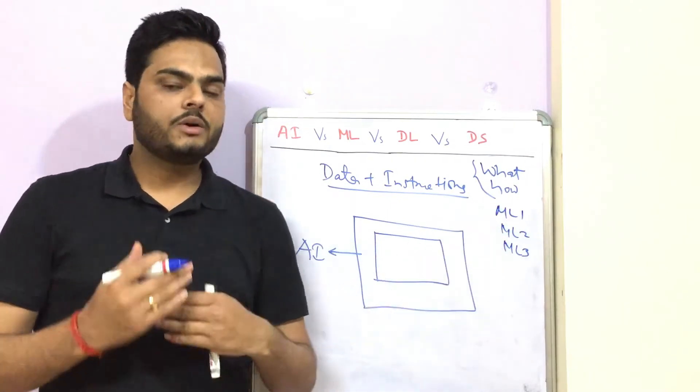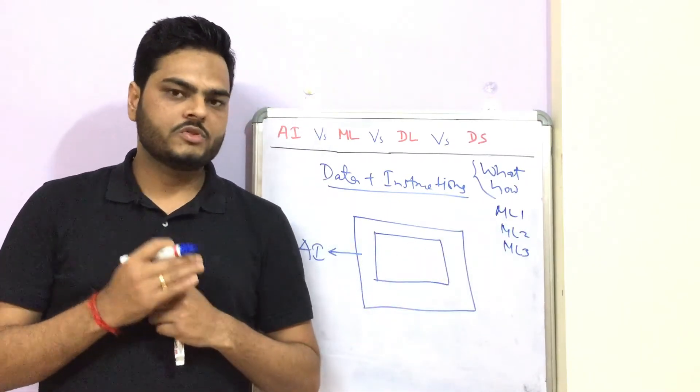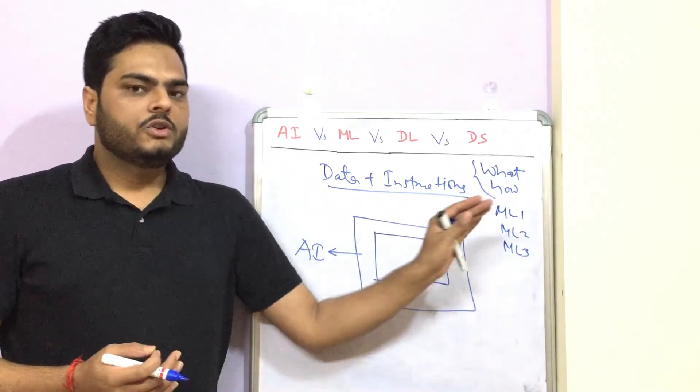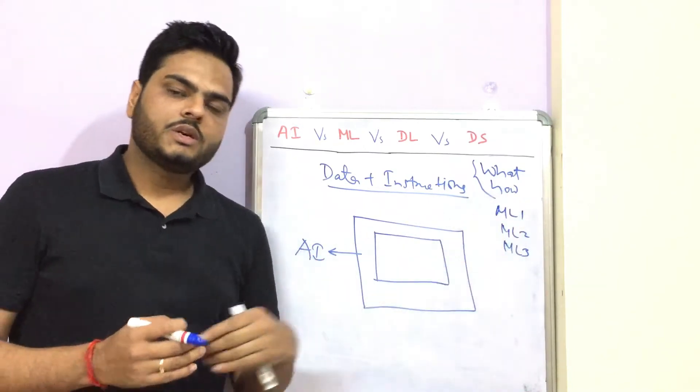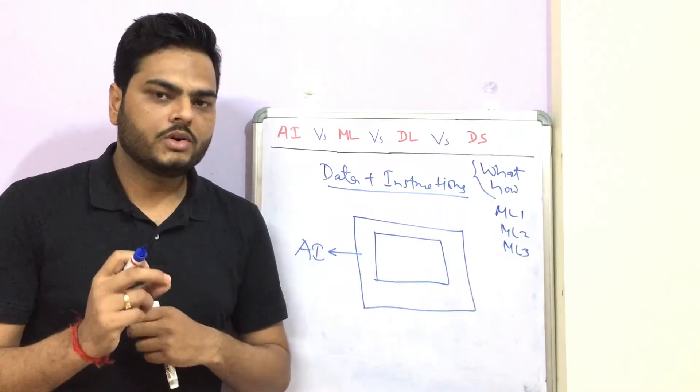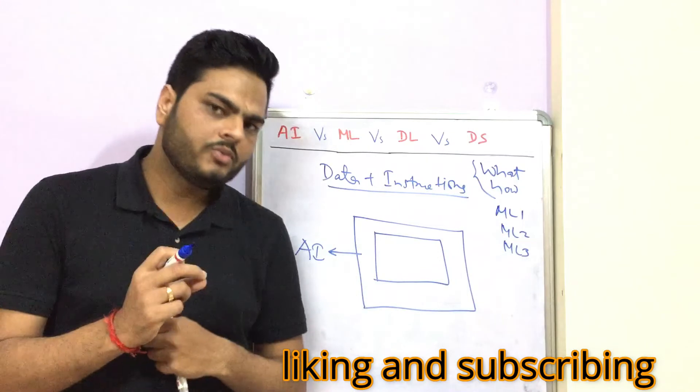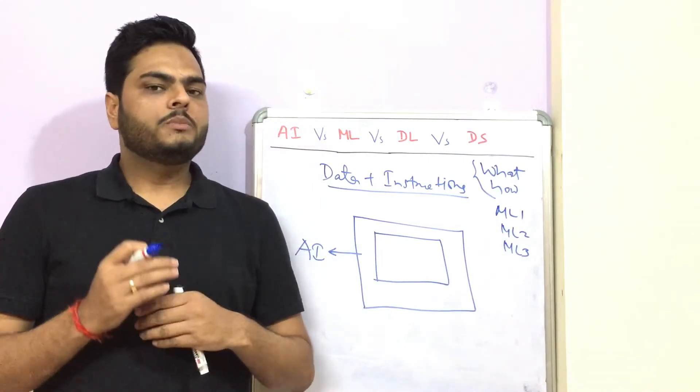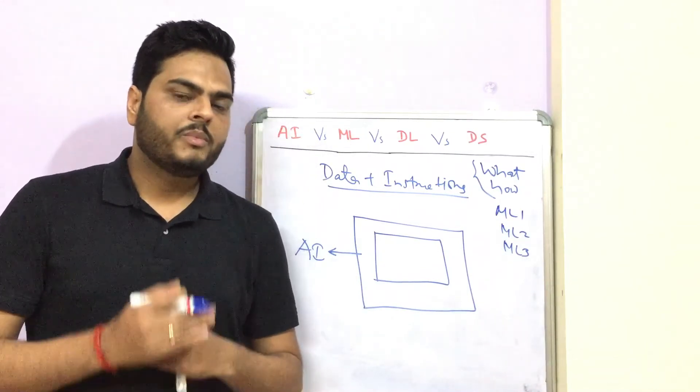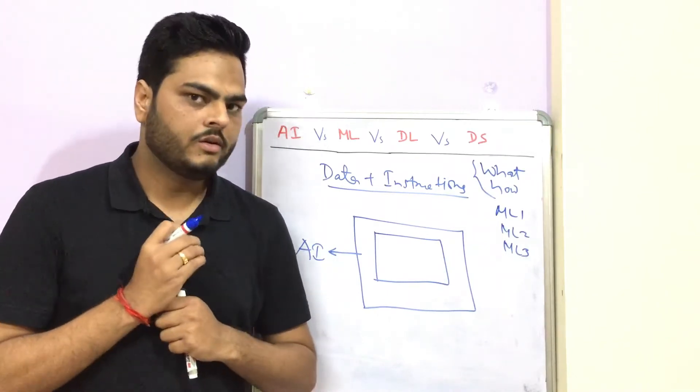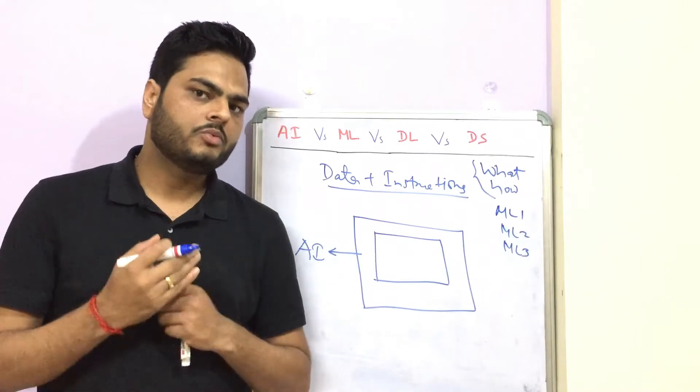It can be algorithm one, machine learning algorithm two, machine learning algorithm three. Algorithm means a way of learning. Let's not go into much technical details. To keep it simple, algorithm is just a way of learning. Out of all these ways, there is one way in which the machine learning happens by trying to mimic the behavior of human brain.